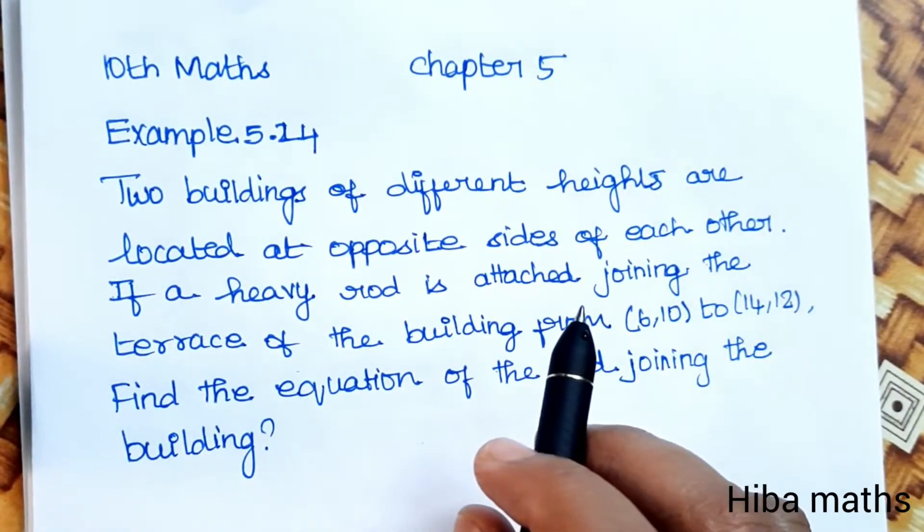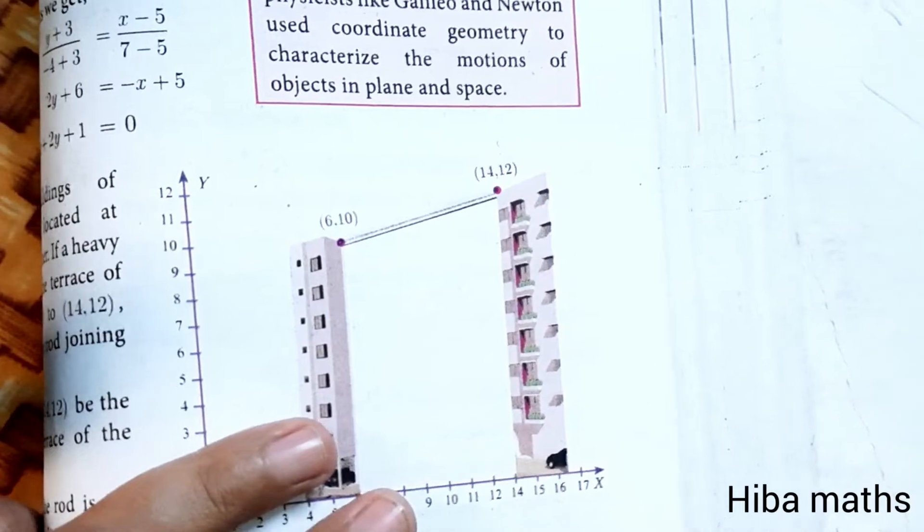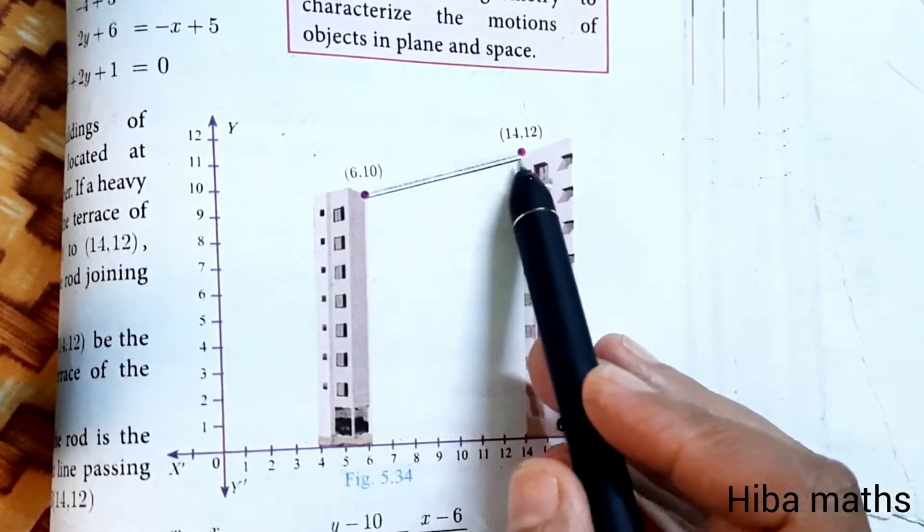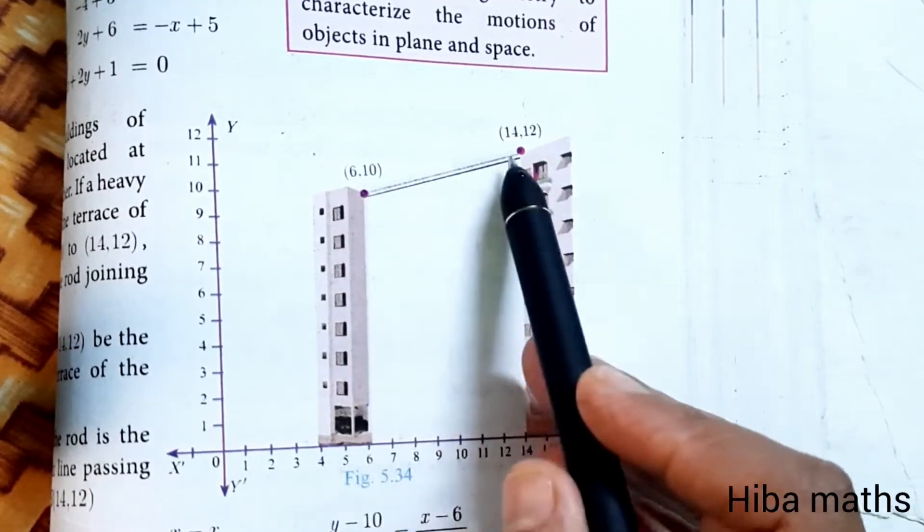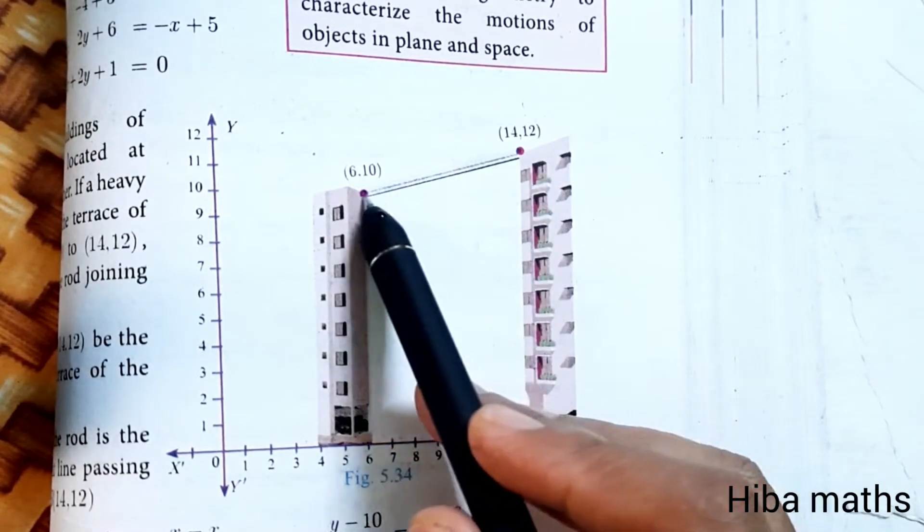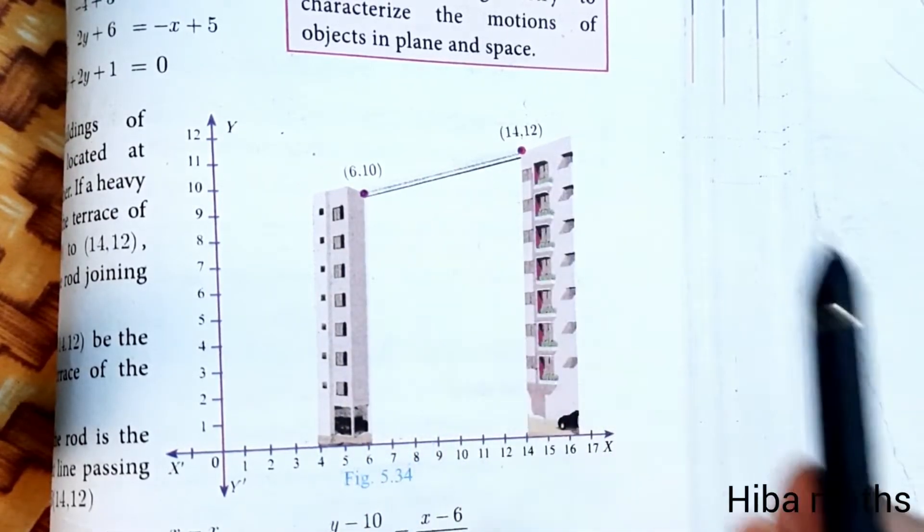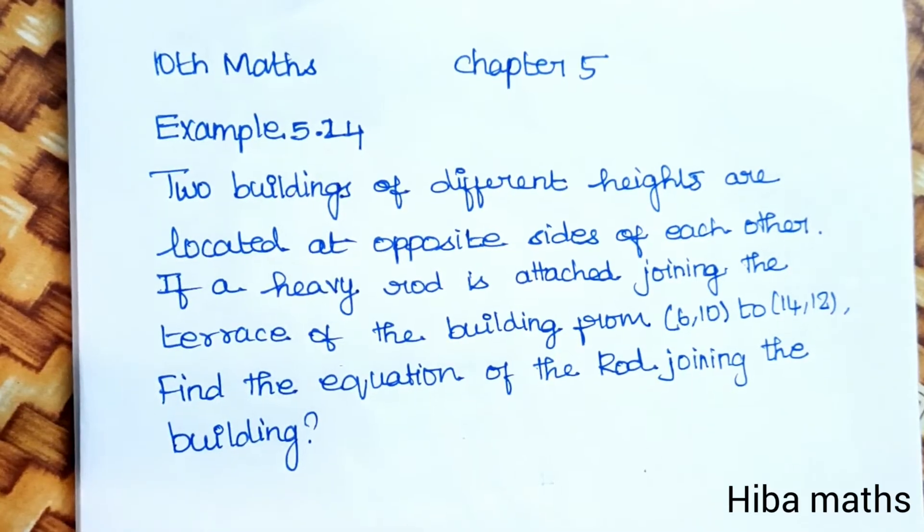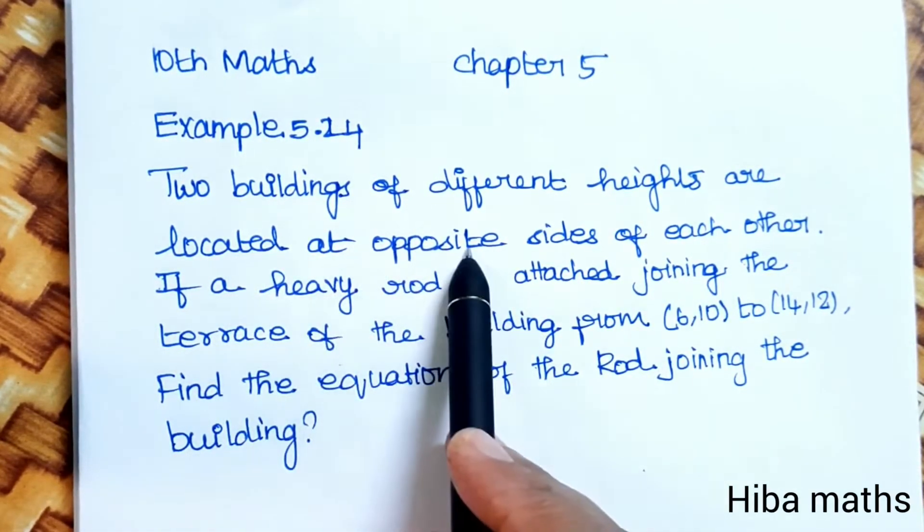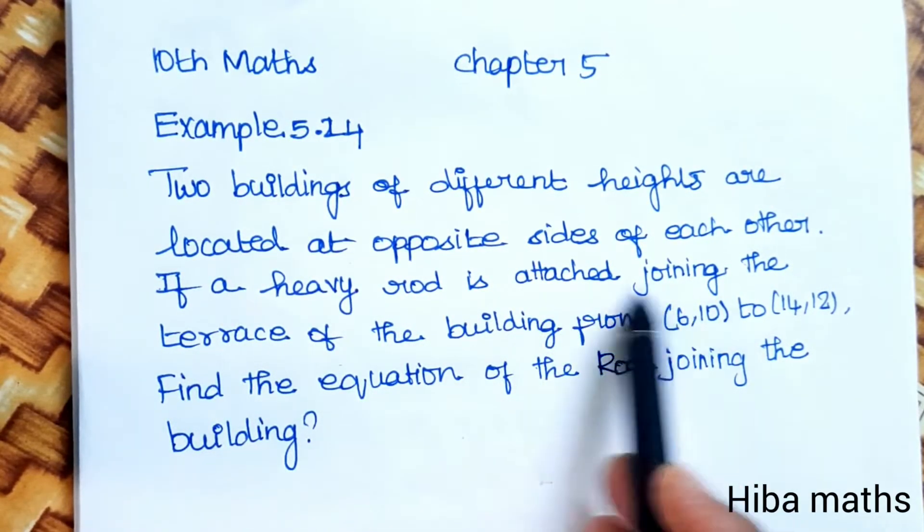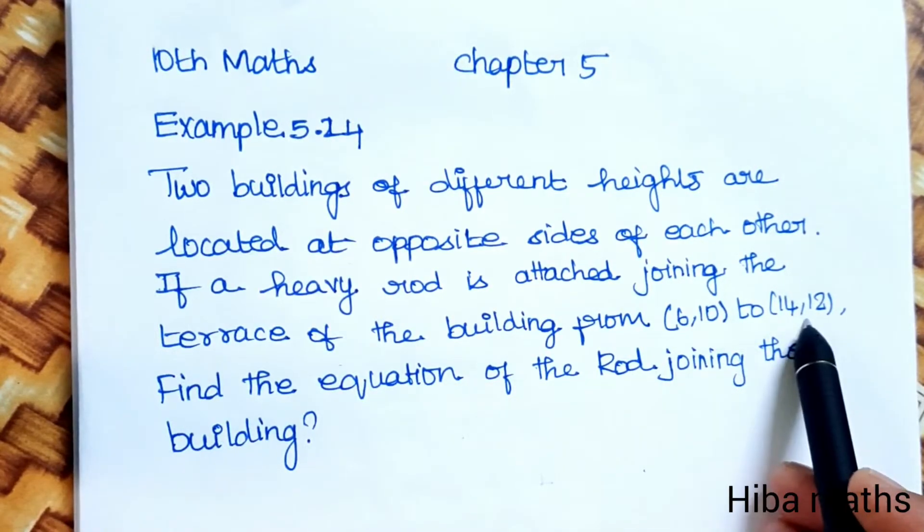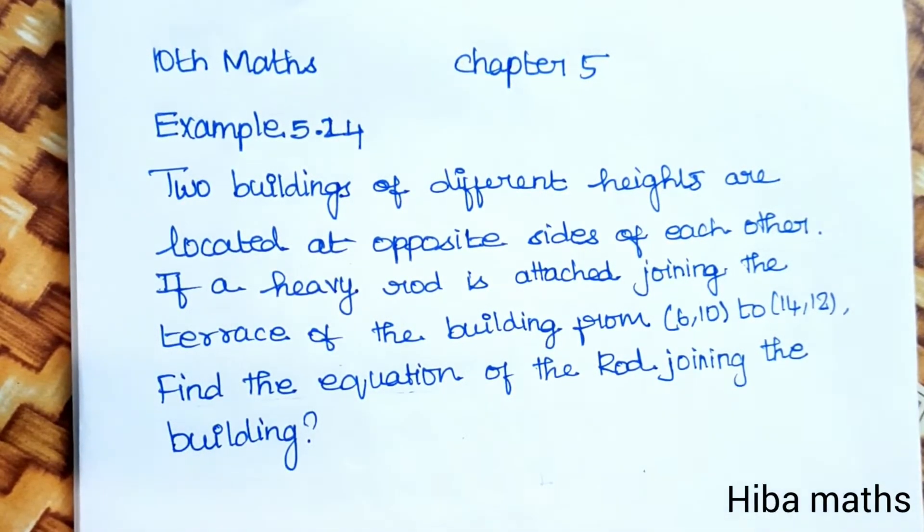If you have the diagram in the book, you can see a rod joining two points. You can join the rod at two points (6,10) and (14,12). The question asks: if there are different heights at opposite sides and you join a rod at the terrace, find the equation of the rod.